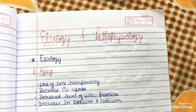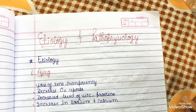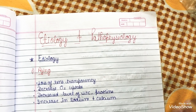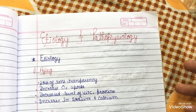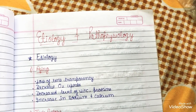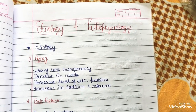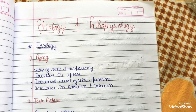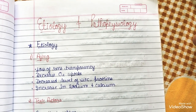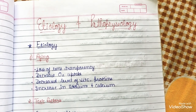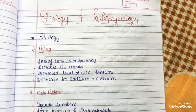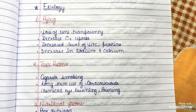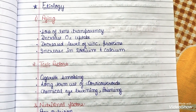The etiology has 6 divisions. The first is risk factors, which include aging, loss of lens transparency, decreased O2 uptake, decreased levels of vitamin C and proteins, and increased sodium and calcium.